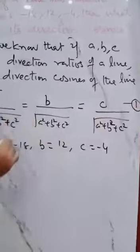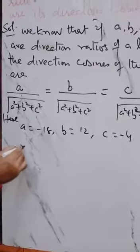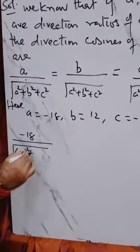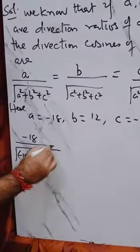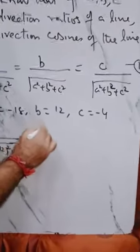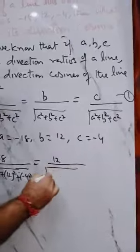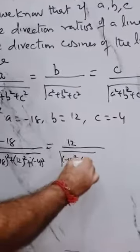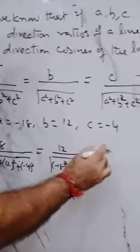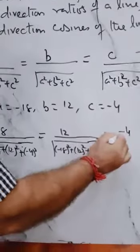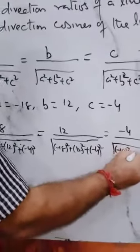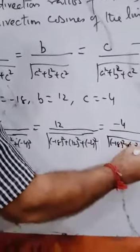If we put in first, we get minus 18 upon square root of minus 18 square plus 12 square plus minus 4 square, equal to b which is 12 upon again the same minus 18 square plus 12 square plus minus 4 square. The third one is c which is minus 4 upon square root of minus 18 square plus 12 square plus minus 4 square.